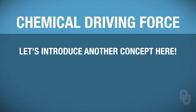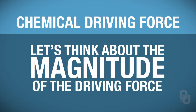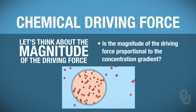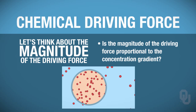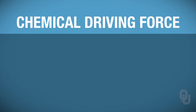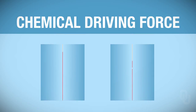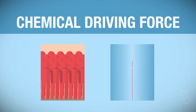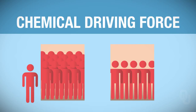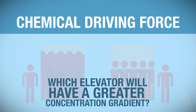Now let's introduce an additional concept: the magnitude of the driving force. We want to know if the magnitude of the driving force is proportional to the concentration gradient. To study this more closely, let's consider two elevators—Elevator A and Elevator B, like elevators in a parking garage. Elevator A has twenty people inside and one person outside. Elevator B has five people inside and one person outside. Which elevator has a greater concentration gradient, A or B?